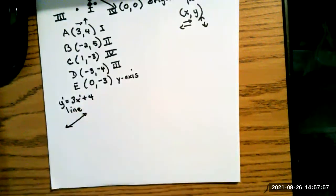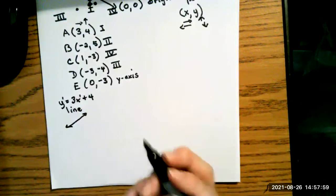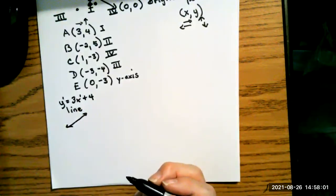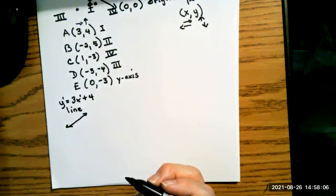Now, if you want to graph this on your calculator, there is a y equal button at the top, and then you put in 3x plus 4, and then hit graph, and it will give you that equation.